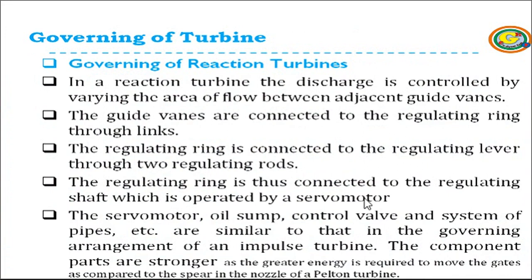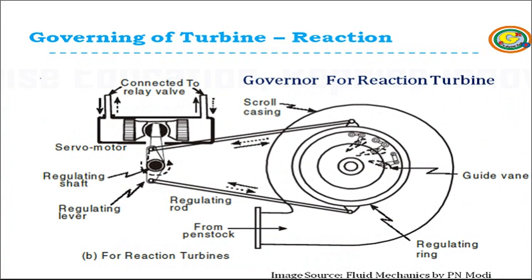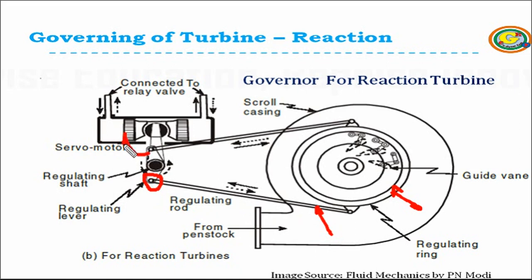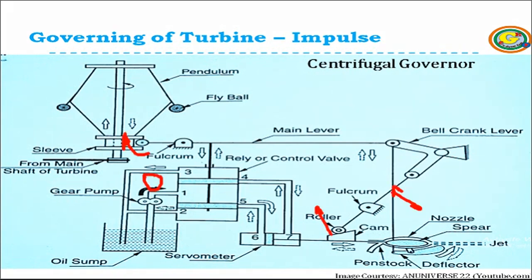In case of reaction turbine, we use the same governor, but here we maintain the area of flow using guide vanes, because in a reaction turbine water comes through the guide vanes. We reduce or increase the area of flow by changing the position of the guide vanes. These guide vanes are connected to the regulating ring, which is connected to the regulating rod, which is further connected to the regulating shaft through the regulating lever, and the regulating shaft is connected to the servo motor. The rest of the arrangement is the same as in the impulse turbine; only the components after the servo motor are different.